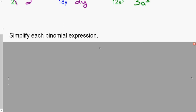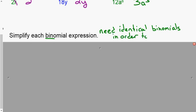When you are dealing with binomials — the prefix 'bi' meaning two — you need to have identical binomials to cancel. Identical would be like (c + 2) and (c + 2). But (c + 2) and (c − 2) are not identical; they need to be identical.